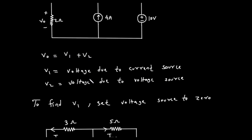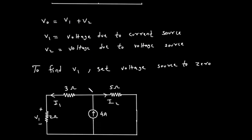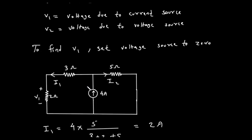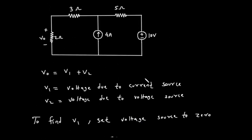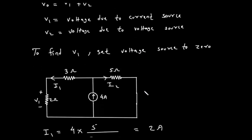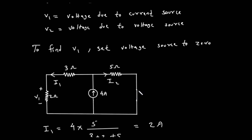Step 1: Finding V1 — Contribution from the Current Source. First, let's find V1, which is the voltage across the 2 ohm resistor due to the 4 ampere current source only. To do this, we must deactivate all other independent sources. Here, we need to deactivate the 10 volt voltage source. A voltage source is deactivated by setting its voltage to zero, which means replacing it with a short circuit, or a simple wire.